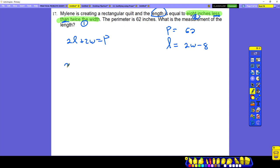So highlight the word less than. This is your less than. Starting from this one, followed by this. So we have twice the width. That's two W minus eight. Once you have this, you go back to your formula. This time, I have to replace my L.